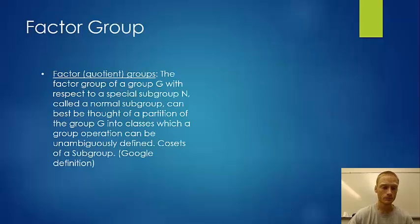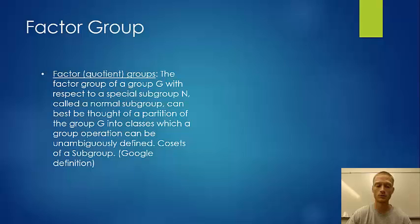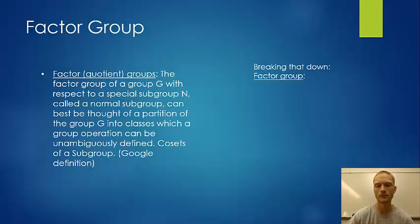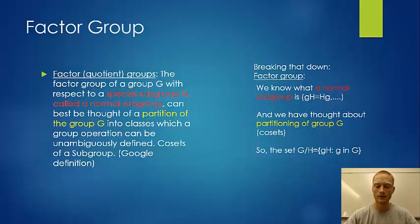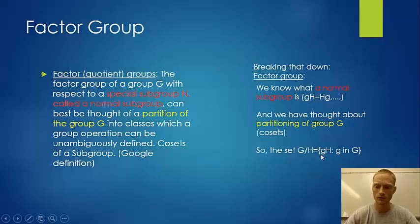Now for our definition of factor group, also called quotient group. The factor group of G with respect to a normal subgroup N can best be thought of as a partition of group G into classes on which a group operation can be unambiguously defined — these are the cosets of the subgroup. We write this as G/H, or G factor H, and it is the set of all elements gH for all g in G.